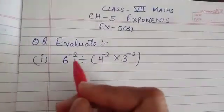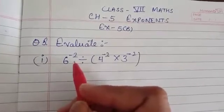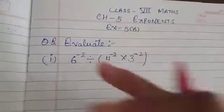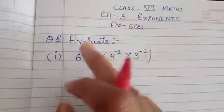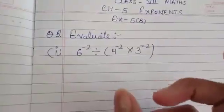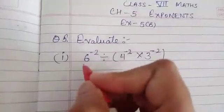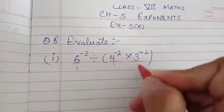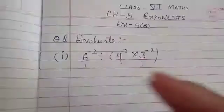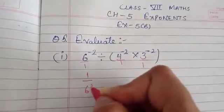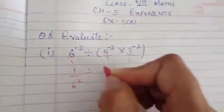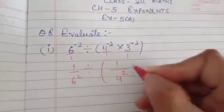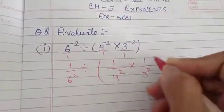The first question is 6 to the power minus 2. As I have already told you, if powers are negative, our first step will be to make the powers positive. We do this by taking its reciprocal. If nothing is given in the denominator, we can write 1 there. So it becomes 1 over 6 raised to power 2, 1 over 4 raised to power 2, and 1 over 3 raised to power 2.